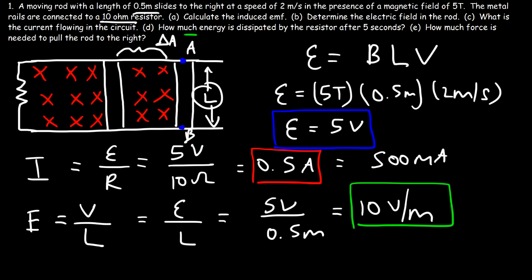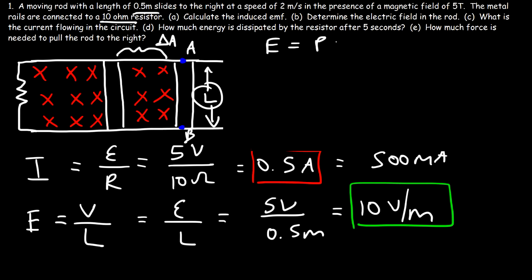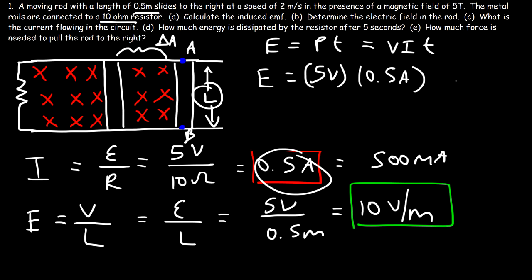Now for part D: how much energy is dissipated by the resistor after five seconds? Energy is equal to power multiplied by time, and the power dissipated by the resistor can be calculated using V times I. So it's voltage times current multiplied by time. The voltage across the resistor is the induced EMF of 5 volts, the current is 0.5 amps, and the time is 5 seconds. So 5 times 0.5 is 2.5, times another 5 is 12.5. In those 5 seconds, 12.5 joules of energy has been consumed by the resistor.